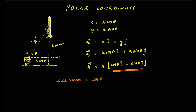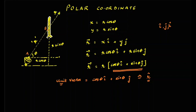So this unit vector is cos theta î plus sin theta ĵ, and we will name this new unit vector. Till now you have studied î, ĵ, and k̂. Now I will introduce r̂. This unit vector has magnitude 1 and is in the direction of the radial direction — clearly a unit vector in this particular direction. So r̂ is nothing but cos theta î plus sin theta ĵ.